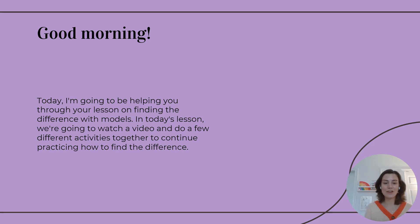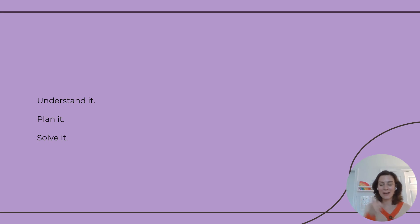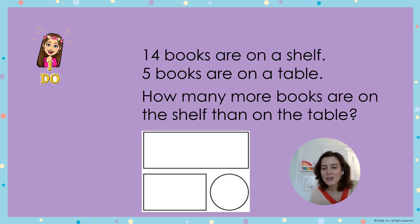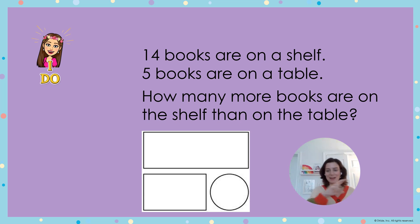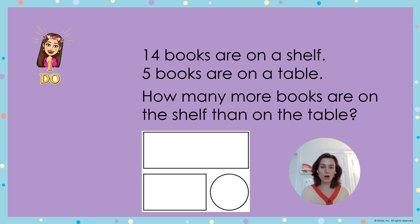In today's lesson we're going to look at a few different activities together and continue practicing how to find the difference. We have three steps in problem solving: Understand It, Plan It, and Solve It. Let's go ahead and read the question. Step one — Understand It: 14 books are on a shelf, 5 books are on a table. How many more books are on the shelf than on the table?